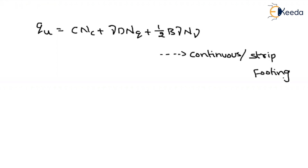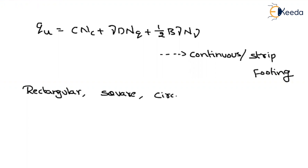But in general, we may have rectangular footing, or we may have square footing, and also we may have circular footings. So if the shape of the footing changes, then how does the bearing capacity of the soil change? The effect will be considered by multiplying some shape factors.